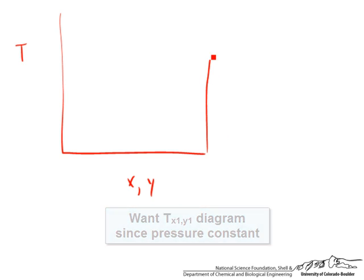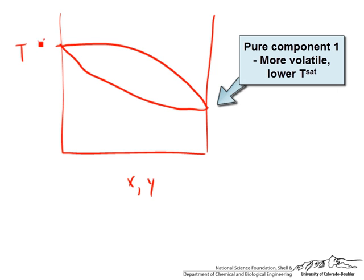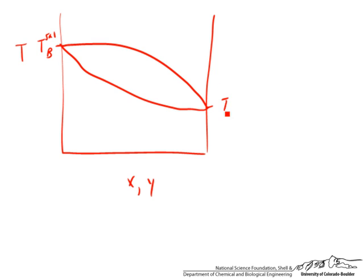And T-X-Y diagrams, if you plot this way for the more volatile component, where this will be T-Sat-B, and this will be the saturation temperature for component A.